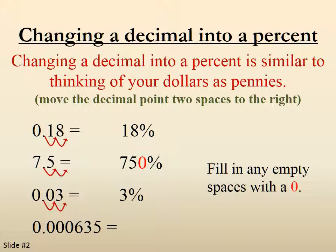0.000635, move the decimal 2 to the right, and we end up with 0.0635%.